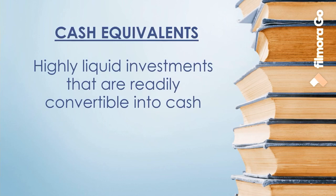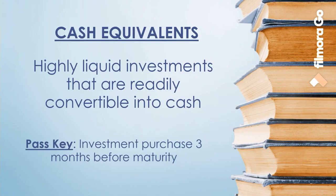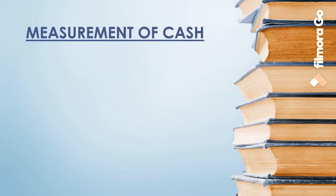Now, do equity securities qualify as cash equivalents? The answer is no, for the very reason that shares do not have a maturity date. However, preference shares with a specified redemption date and acquired three months or less before the redemption date can qualify as cash equivalents. What is important to be considered a cash equivalent is the date of purchase, which should be three months or less before maturity.